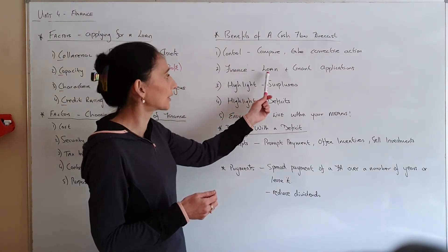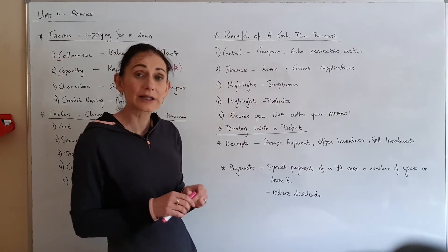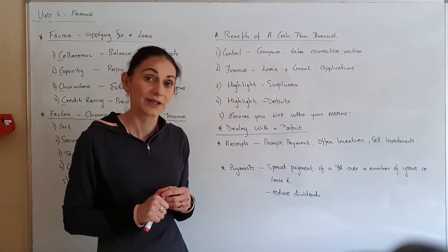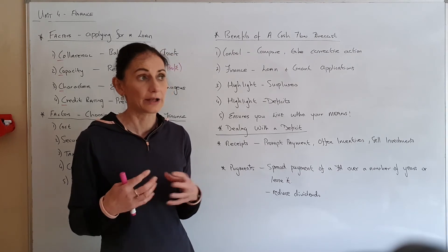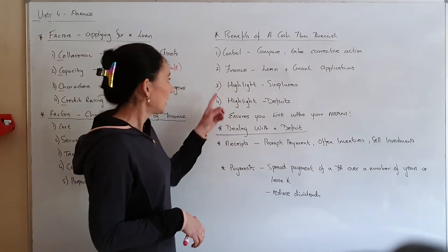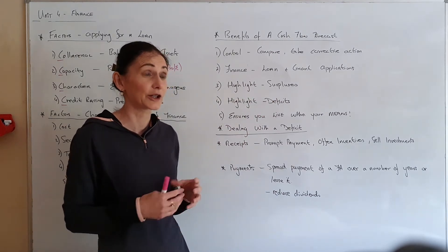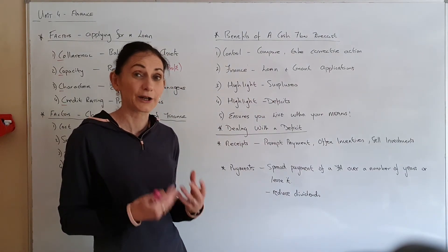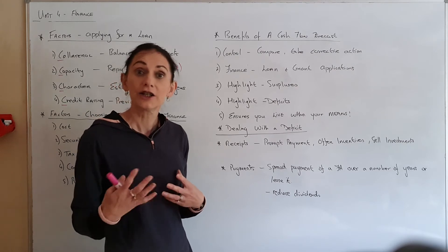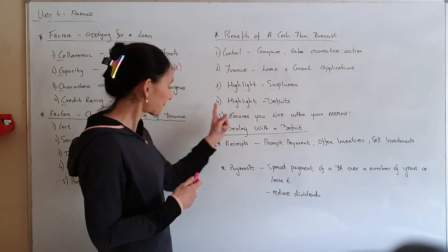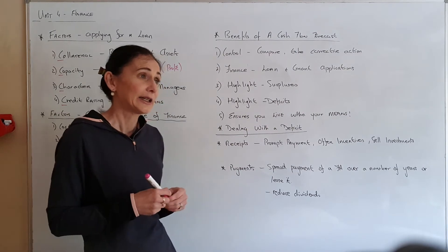If you were looking for a loan or a grant from the government, they would want to see your cash flow forecast. It would highlight surplus: if there's months where you're going to have a large surplus, the money shouldn't be sitting there idle—it should be invested somewhere to earn interest. It'll highlight maybe months where you have a deficit.